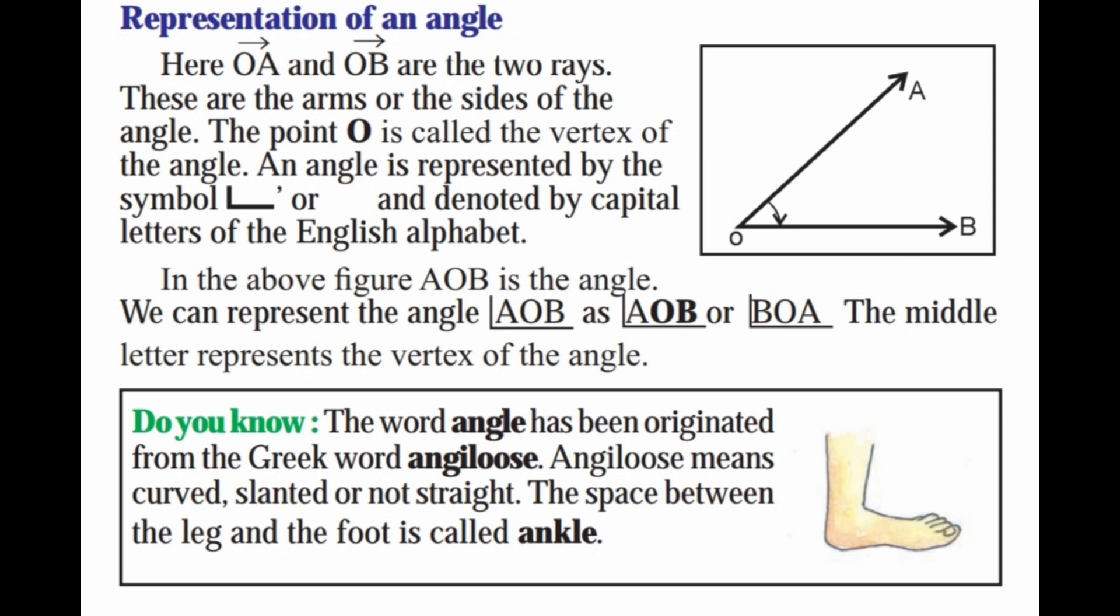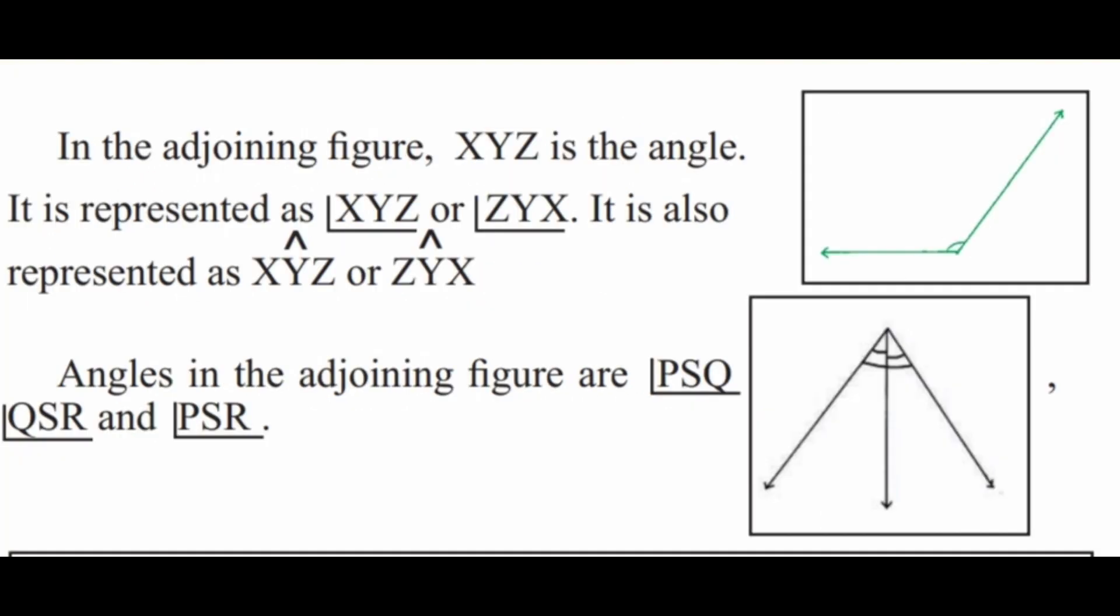So, here OA and OB are the lines. O is the common point. Angle AOB or BOA.